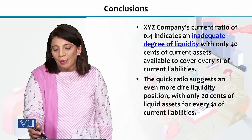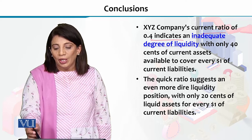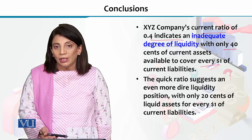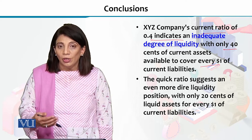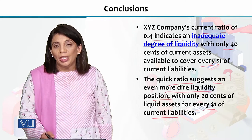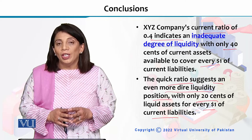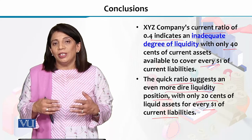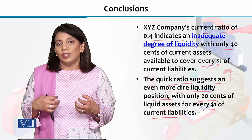In contrast, XYZ's current ratio of 0.4 indicates inadequate liquidity — for every $1 it needs to pay, it only has 40 cents available. Since the current ratio is below one, it signals the company has insufficient funds to meet its financial obligations. The quick ratio further shows XYZ's liquidity position is more dangerous: it only has 20 cents available for every $1 of current liability. This is how these different ratios help us assess a company's financial position, performance, and overall financial health.